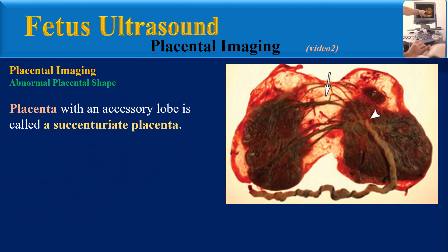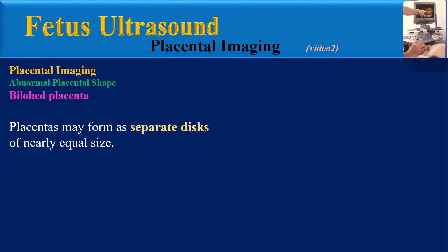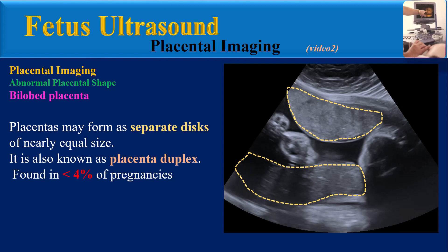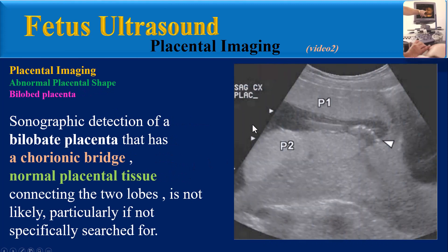A placenta with an accessory lobe is called a succenturiate placenta. At ultrasound, the accessory lobe is usually smaller than the main placenta; however, occasionally the accessory lobe is equal in size to the main lobe, which is termed a bi-lobed placenta. Placentas may form as separate discs of nearly equal size — also known as placenta duplex — found in less than four percent of pregnancies. The cord inserts between the two placental lobes, either into a connecting chorionic bridge or into intervening membranes.